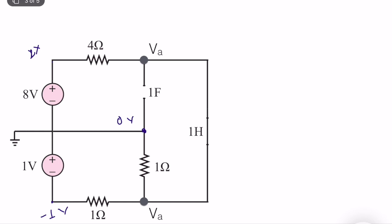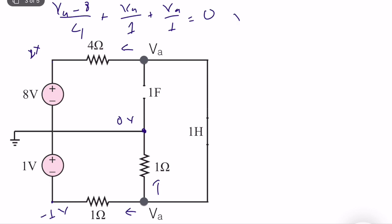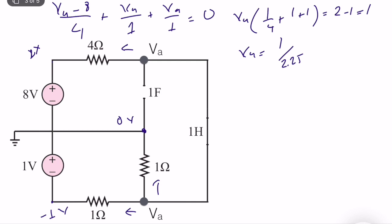Let's apply node voltage analysis. The currents leaving the node give us: (VA minus 8) divided by 4, plus VA divided by 1, plus VA divided by 1, all equal to zero. So VA times (1/4 + 1 + 1) equals 2 minus 1, which equals 1. Therefore VA is equal to 1 over 2.25 volts, or approximately 0.444 volts.